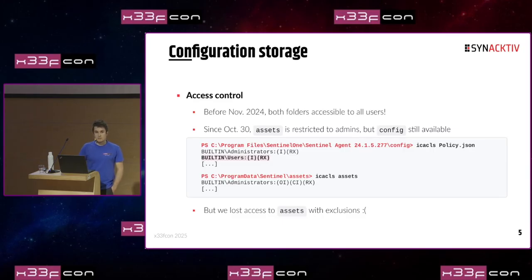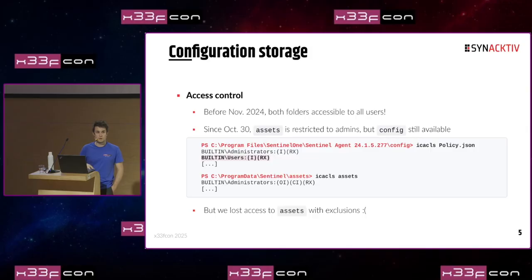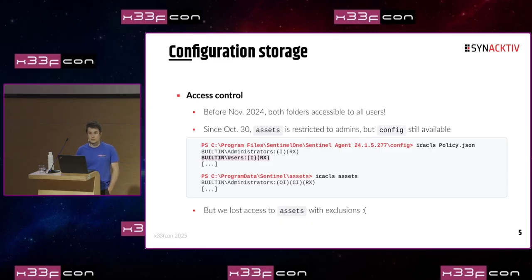Regarding access control on both folders, before November last year, both folders were accessible from unprivileged users, meaning with SMB access you could read the exclusions for the machines you were targeting. But from October 30th, SentinelOne restricted access to the ASETS folder, which means we cannot access exclusions that way anymore, so we had to find something else.